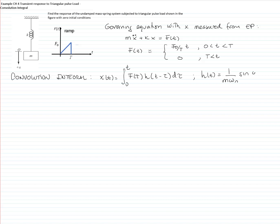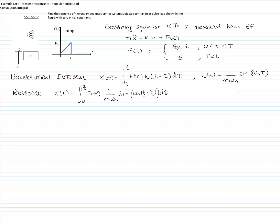In the case of no damping, the impulse response is 1 over (m·omega_n) times sine of omega_n·t, where omega_n is the natural frequency of the system. The response will be the integral of the force function evaluated at tau times h evaluated at (t minus tau), with tau as the variable of integration. To solve this integral, we need to recall integration by parts, because we have two functions of the variable tau.